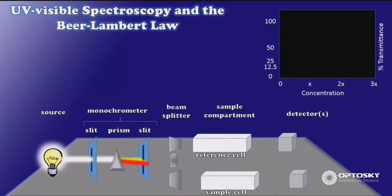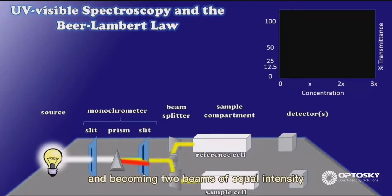So each wavelength of light is moving to a different place in space. So only one wavelength of light in this situation is going to make it through the second slit in my monochrometer, striking the beam splitter and becoming two beams of equal intensity.